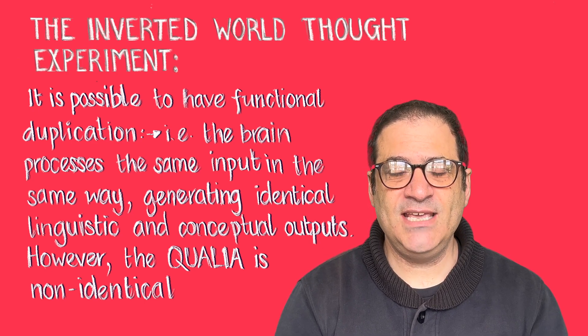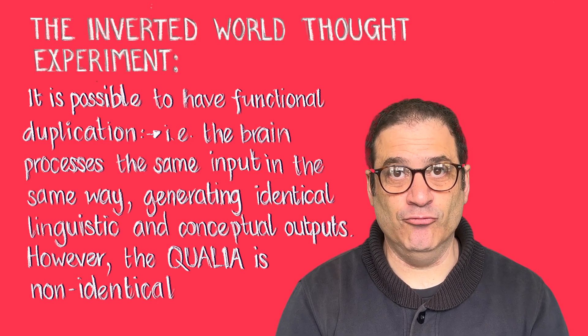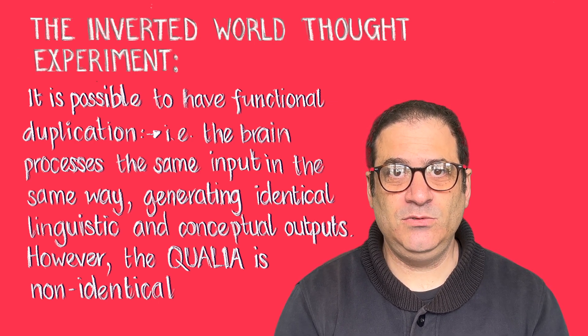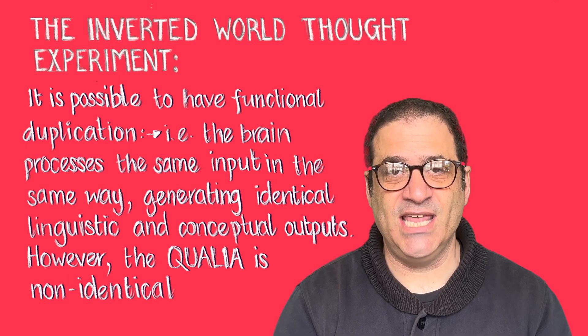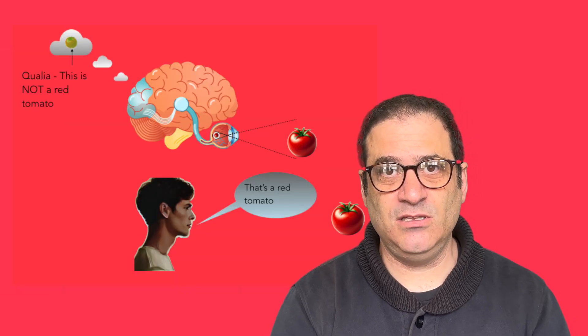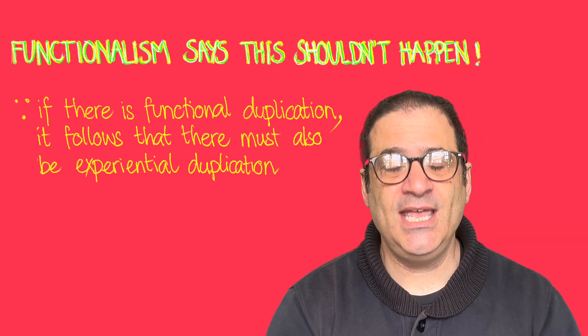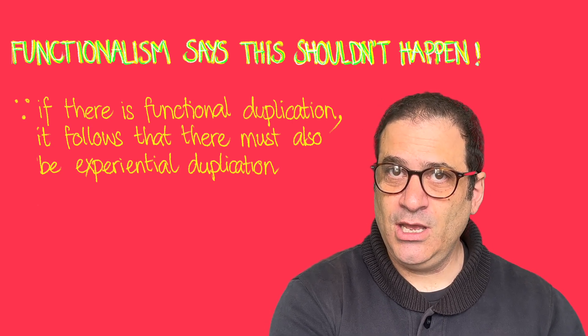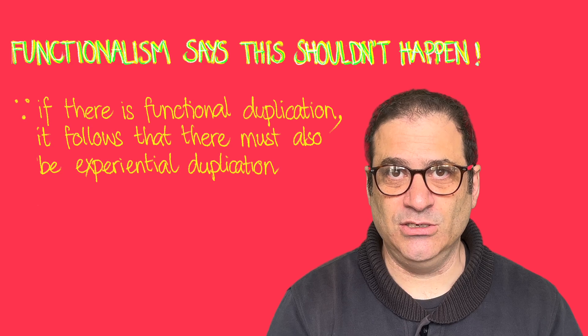For example, most people in the world when they look at ripe tomatoes see red — the color we see when we see red — but there's someone in the world who doesn't see red when they see a ripe tomato; they see green, the color we see when we look at grass. If that person had been brought up in the same linguistic community as us, they've been brought up to call that color red. So they will functionally duplicate everybody else: when you ask them what color the tomato is, they'll say red and believe the tomato is red, but in fact they'll be seeing what we see when we see grass — they'll be seeing green. The problem for functionalism is that it says this shouldn't happen: if there is functional duplication, there should be experiential duplication, but that's not happening.